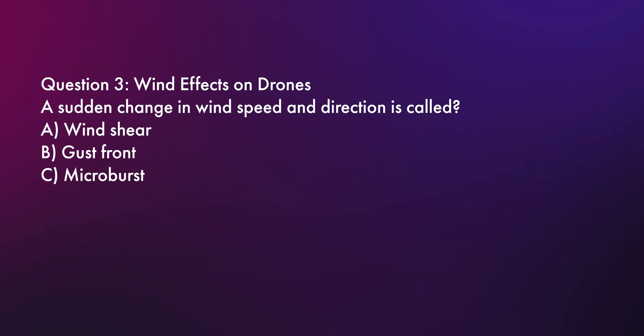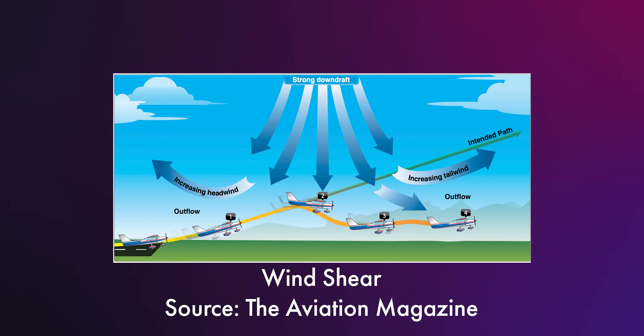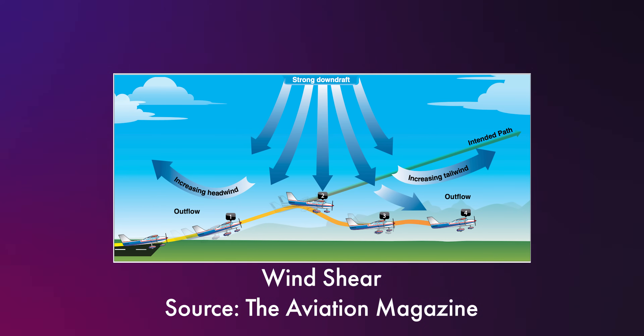Question number three: Which weather phenomenon refers to rapid changes in wind speed or direction? Is it A, wind shear; B, gust front; or C, microburst? The correct answer is A, wind shear. Wind shear refers to rapid changes in wind speed or direction, which can destabilize your drone and make it difficult to control. A gust front is caused by thunderstorm outflows but isn't always connected to sudden directional changes. Microbursts are localized downdrafts — a specific type of wind shear — but they're not the broad term used in this context.